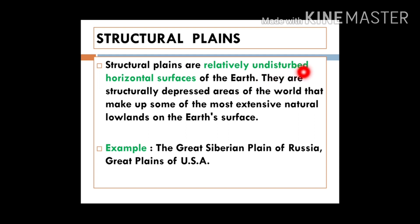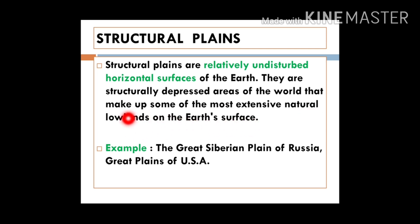Structural plains are relatively undisturbed horizontal surfaces on the earth. They are structurally depressed areas of the world that make up some of the relatively extensive natural lowlands. Plains are often known as lowlands because they have very low relief and elevation. Good examples are the Great Siberian Plain of Russia and the Great Plains of the USA.